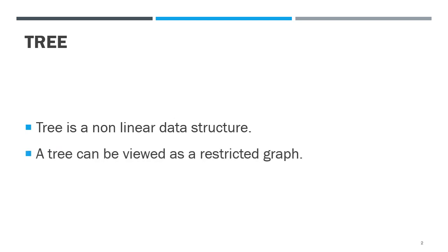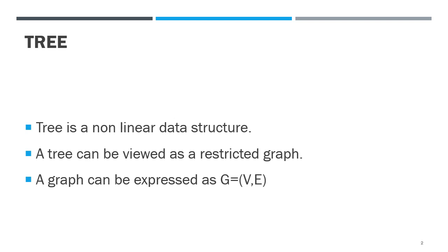A tree can be viewed as a restricted graph. It is known in terms of nodes, edges, and terms. A graph can be expressed as G equals V, E, where V is a set of vertices and E is a set of edges. This is the definition of a graph.